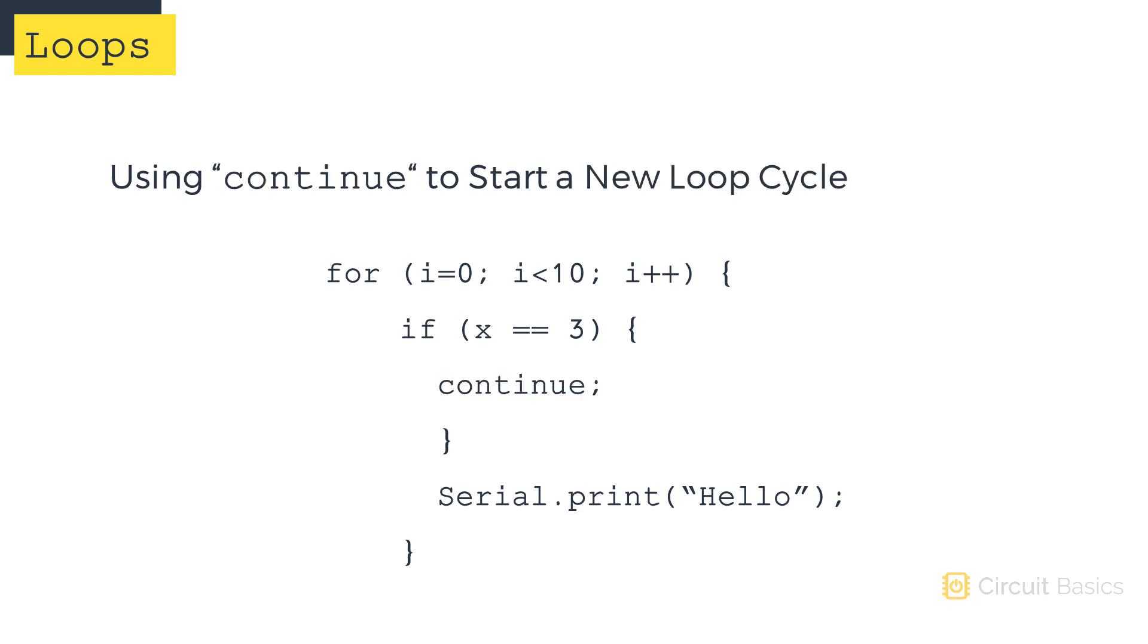Another keyword called continue allows even more control over the action of loops. Continue causes the sketch to stop the current iteration of the loop and start with a new cycle. As long as x is not equal to 3, hello will get printed once each time through the for loop.